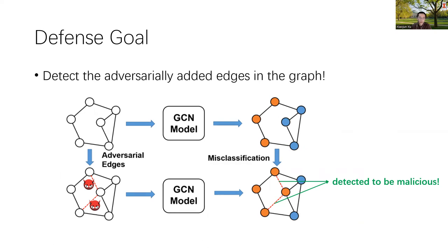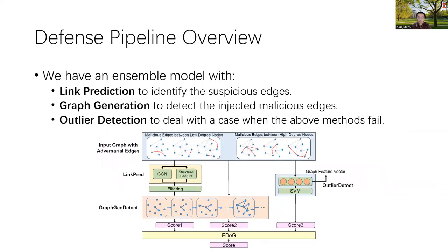Given an untrusted graph which may or may not contain malicious edges, we build a machine learning model to identify which edges are malicious. Our defense pipeline is mainly an ensemble model that consists of three different components, each dealing with different scenarios where malicious edges occur: the link prediction algorithm, the graph generation algorithm, and an outlier detection-based method. The final pipeline is an ensemble of these three components.